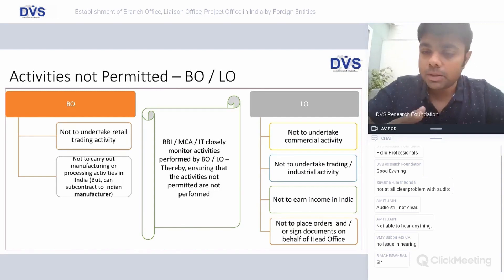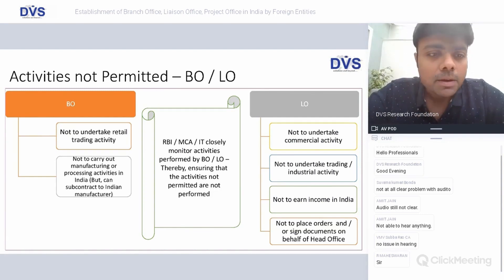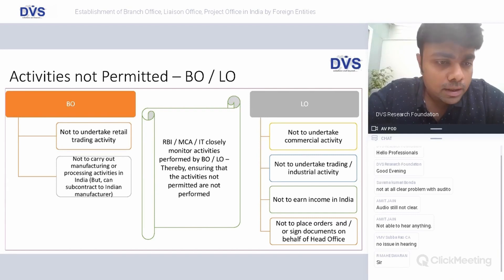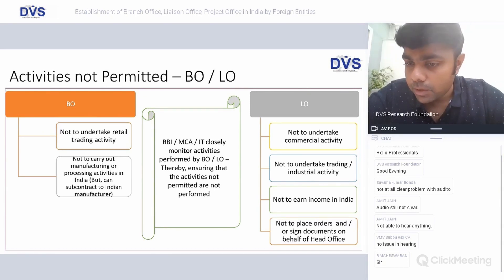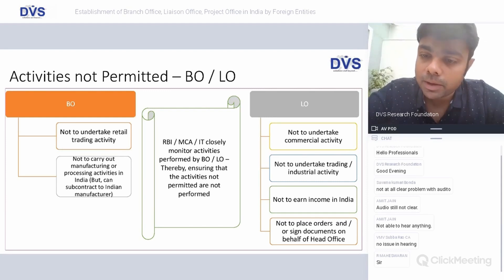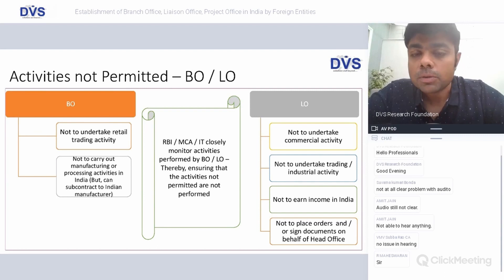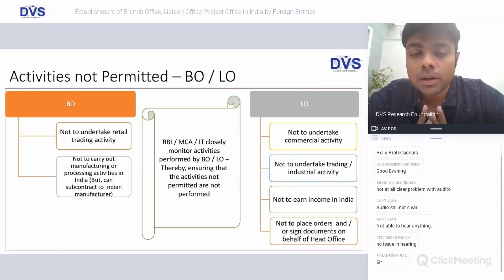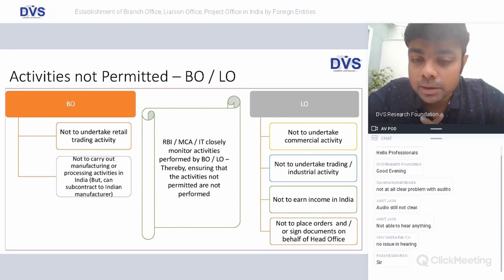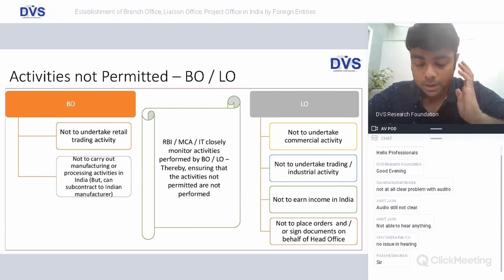Activities not permitted for a branch office: it cannot undertake retail trading activity, cannot carry out manufacturing or processing in India — though it can subcontract to an Indian manufacturer. A branch office can set up a manufacturing outfit only within an SEZ, not outside. For a liaison office: it cannot undertake commercial, trading, or industrial activity; cannot earn income in India; and must not place orders or sign documents on behalf of the head office.